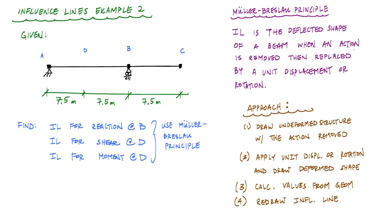What's up YouTubers, welcome back. In this video, we're doing another influence line example problem using Mueller-Breslau principle. I've got here a simply supported beam that is pinned at A and roller-supported at B.